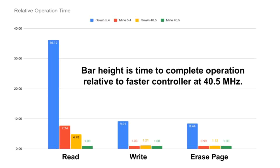Here are the speeds in graphical form normalized to the faster controller at 40.5 megahertz. Blue and yellow are the Gowen controller at 5.4 and 40.5 megahertz; red and green are the faster controller at those same clock speeds. Green is 1.0 due to normalization. A Gowen write at 5.4 megahertz takes 9.21 times as long compared to the faster controller at 40.5 megahertz. The faster controller takes about the same time for writes and page erases regardless of clock speed. For reads, performance varies with clock speed because reads take few clocks and a sub-clock time delay is not possible. The Gowen controller uses more clock cycles for reads than necessary.